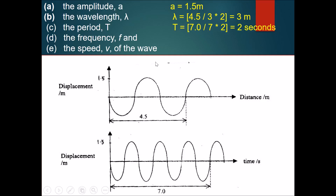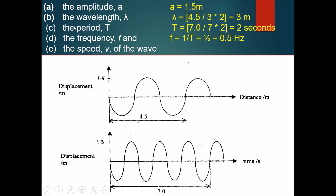Calculating the frequency is straightforward once you have the period. The formula is f equals 1 over T. Since the period is 2 seconds, the frequency is 1 over 2, which equals 0.5 hertz.